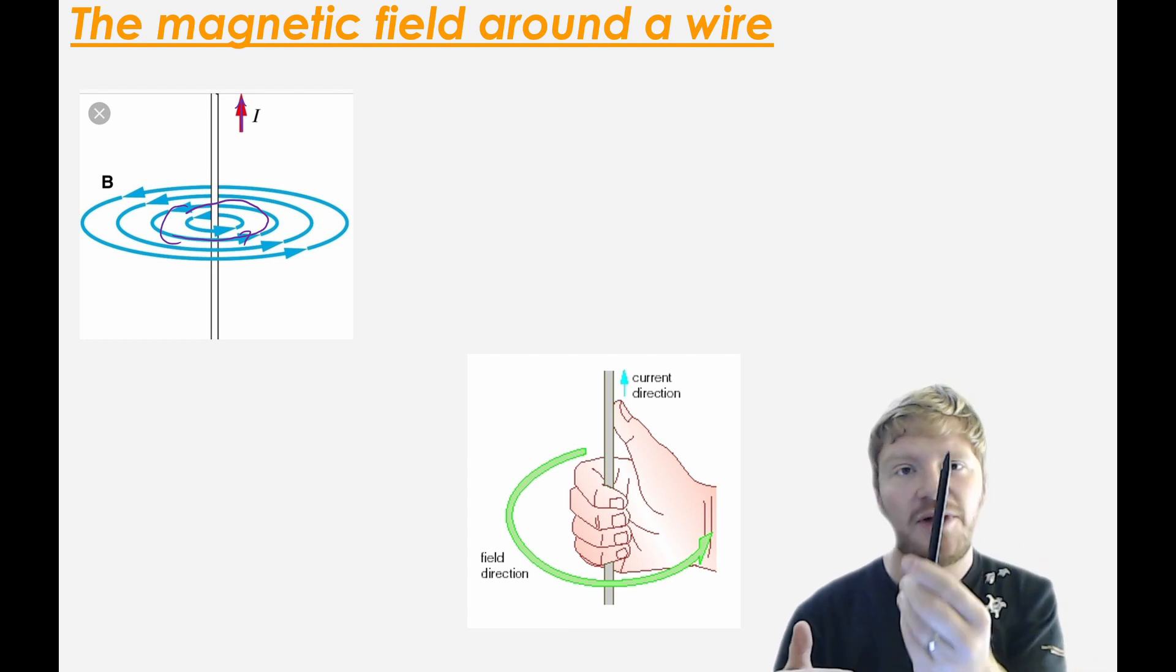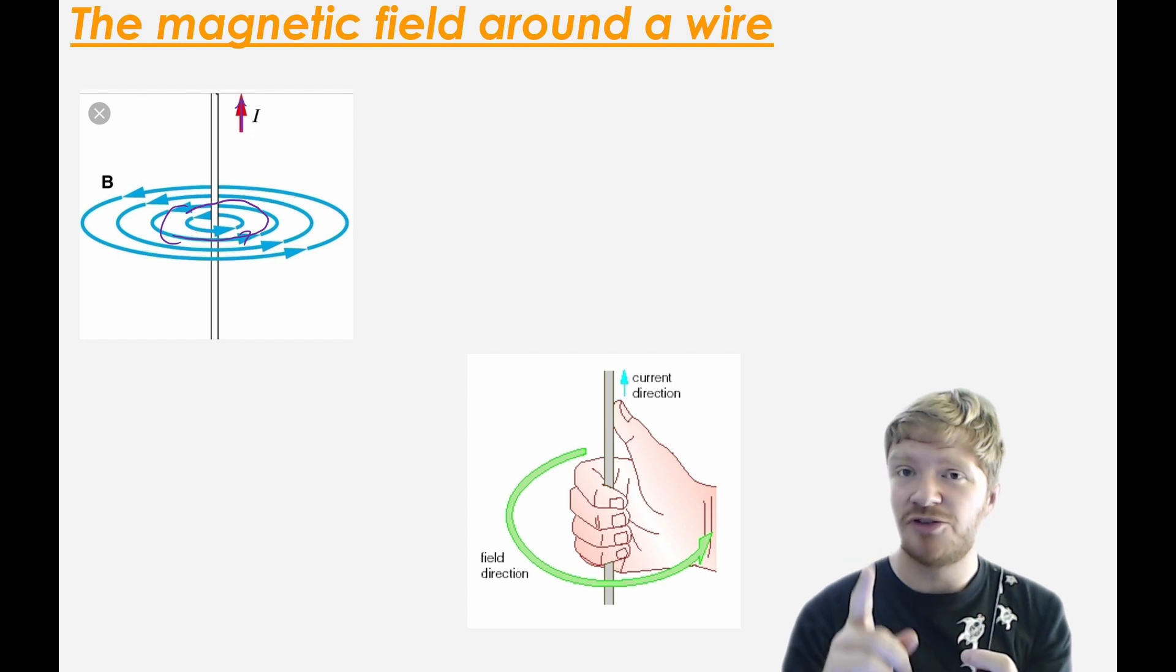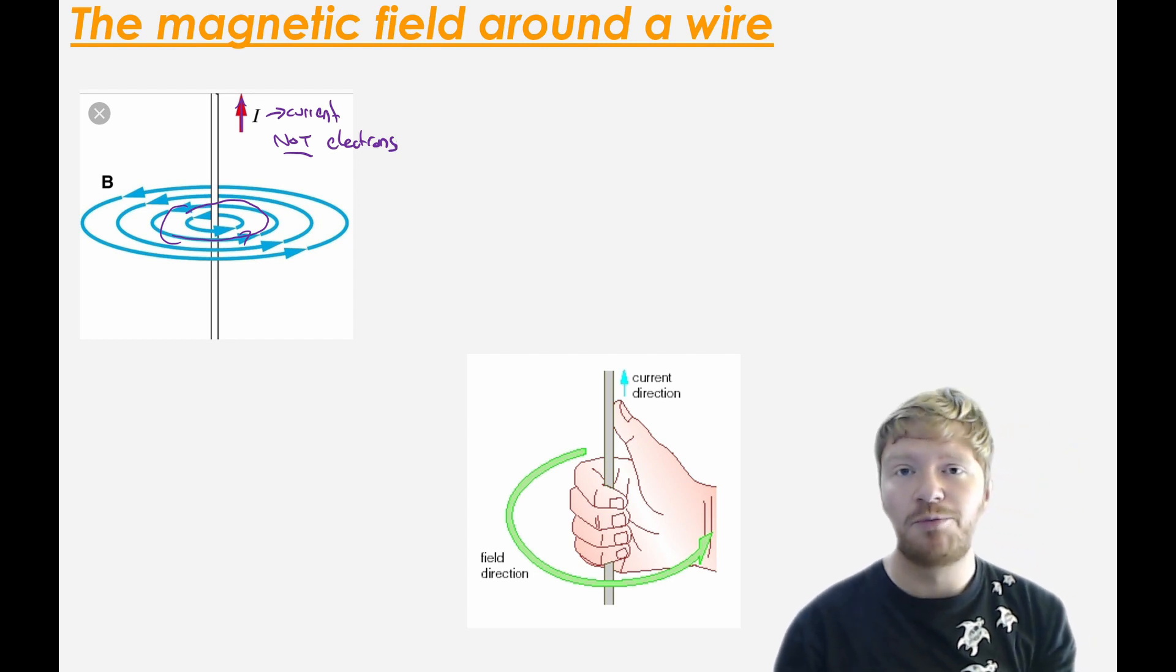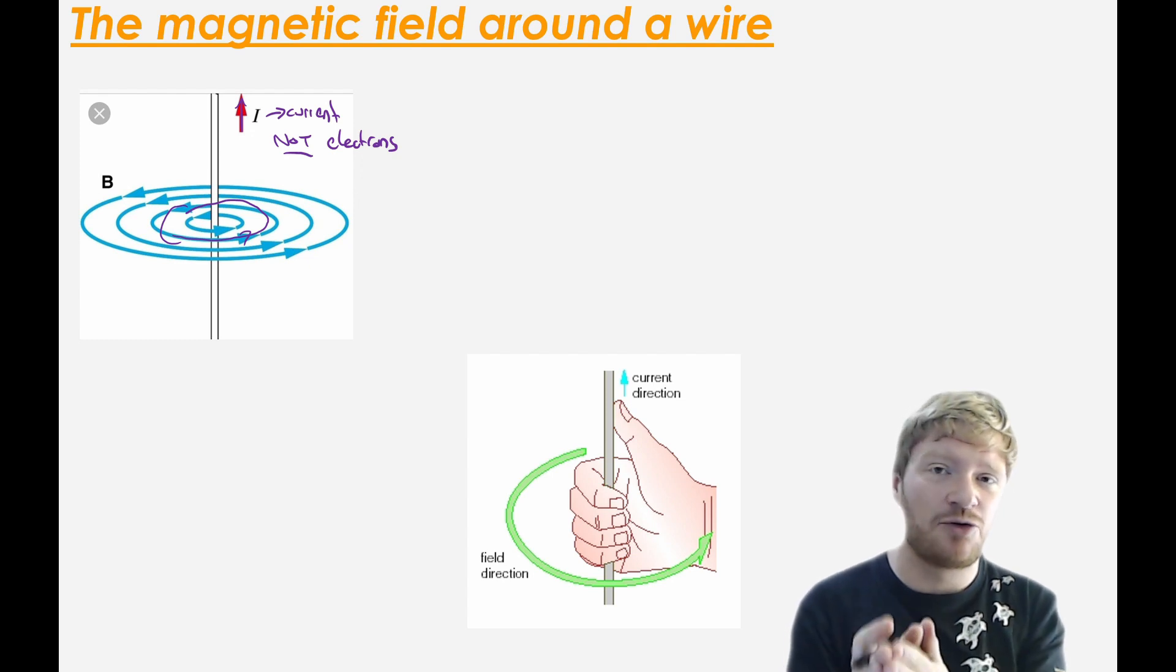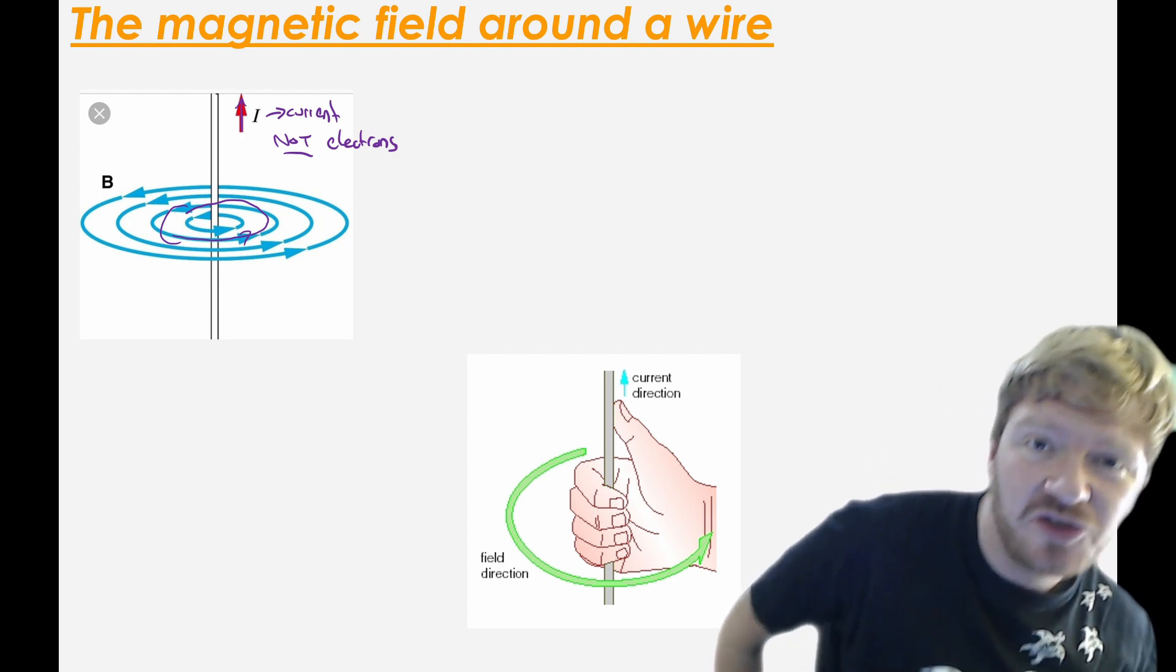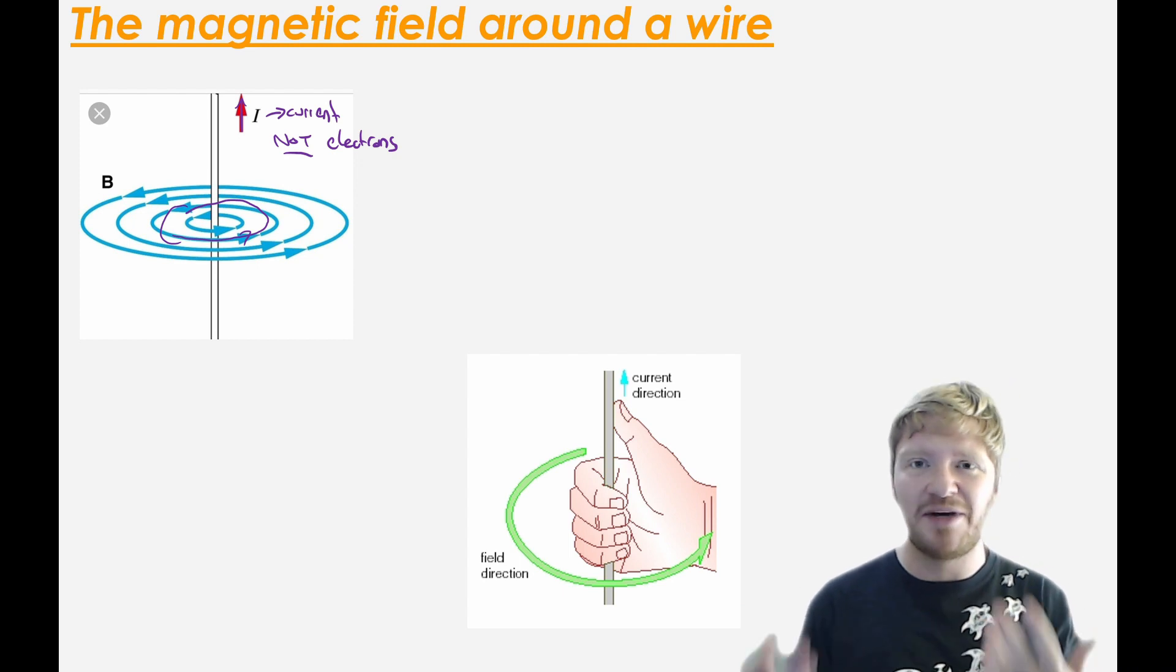If you get your pencil, make sure that your pencil is pointing in the direction that current is going. This is really important. We use current, not electrons. So remember that current runs from positive to negative. Even though we know that what's really happening is electrons are going from negative to positive, because of all the rules and the way that things were written hundreds of years ago, we still say that the current itself is going from positive to negative. It's this imaginary thing.